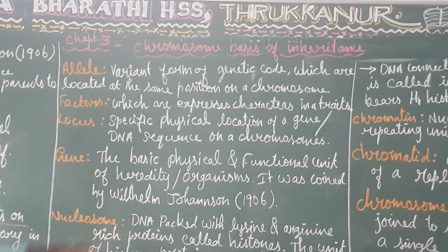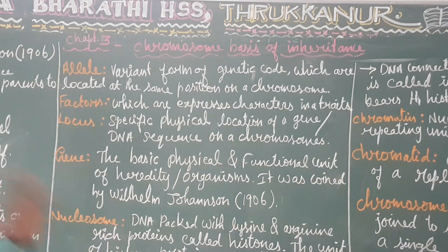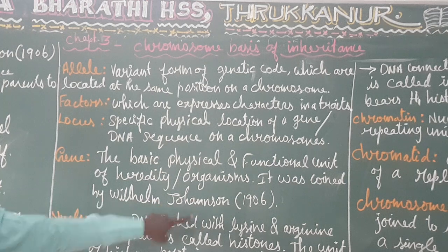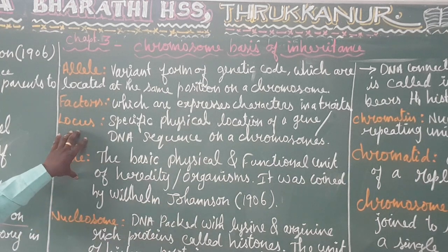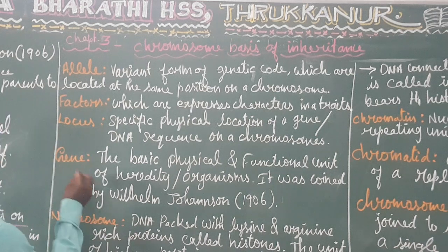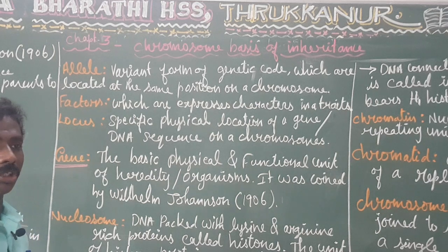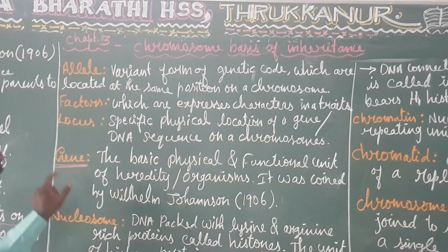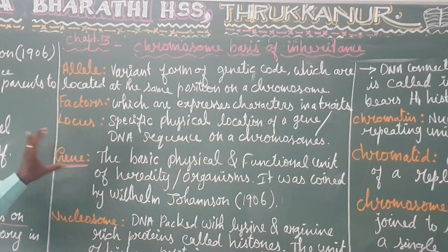A gene is the physical and functional unit of heredity. The term 'gene' was first coined by William Johnson in 1906. All morphological, physiological, and functional characters of an organism come from gene expression. On the genes, one of the nucleotide variations is there — that is a modern genetics concept.